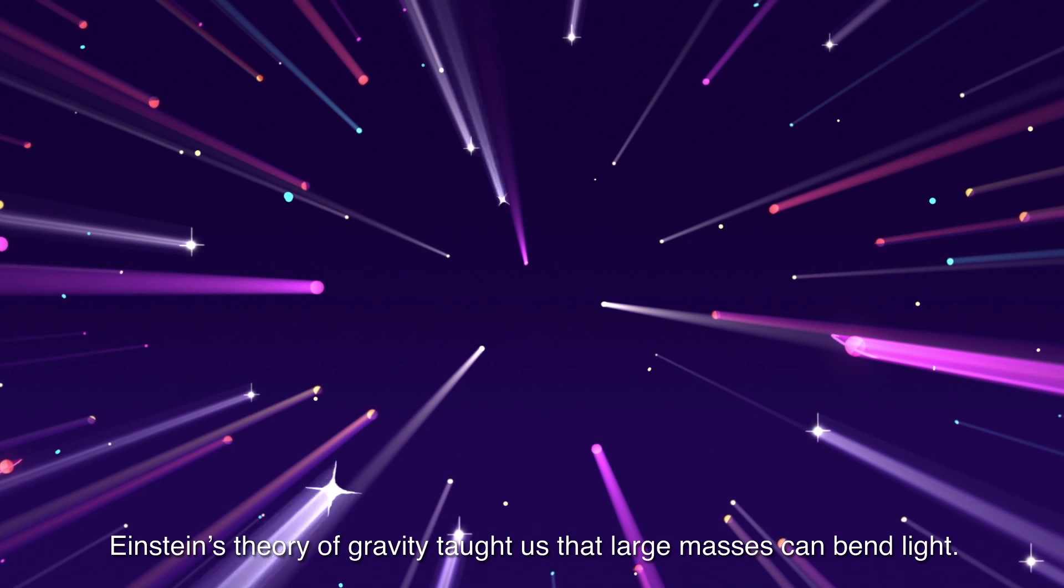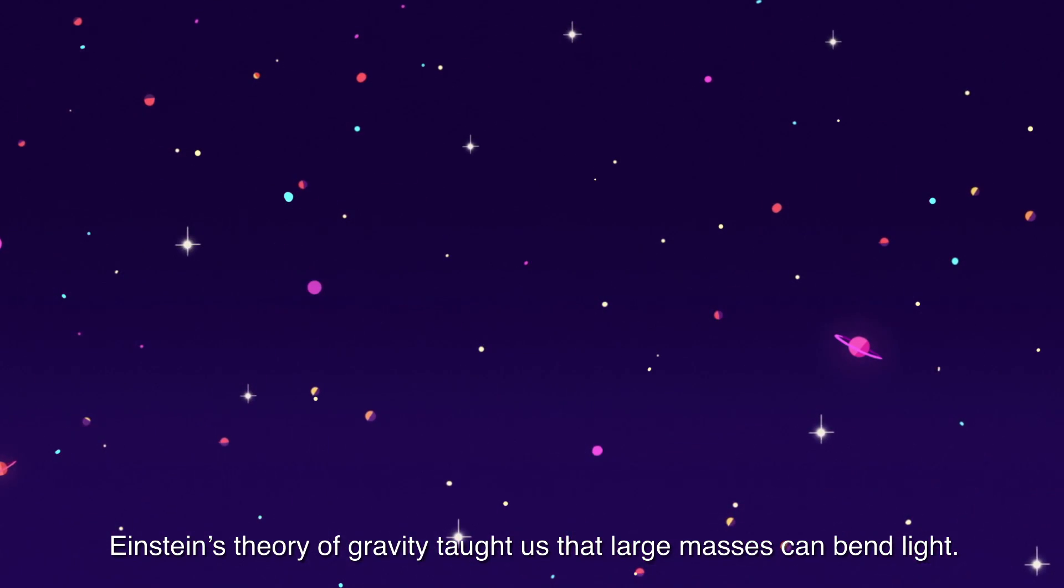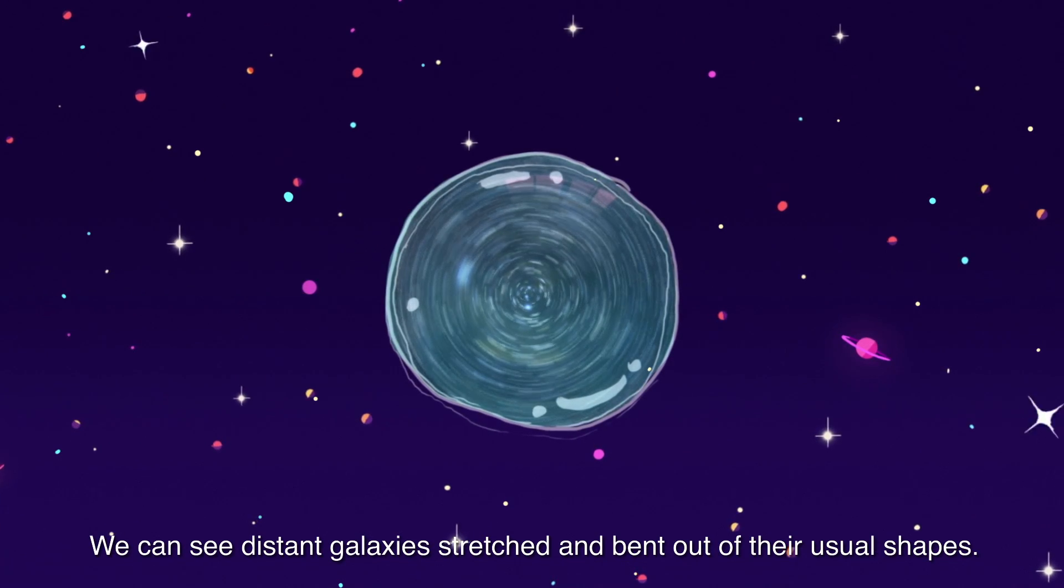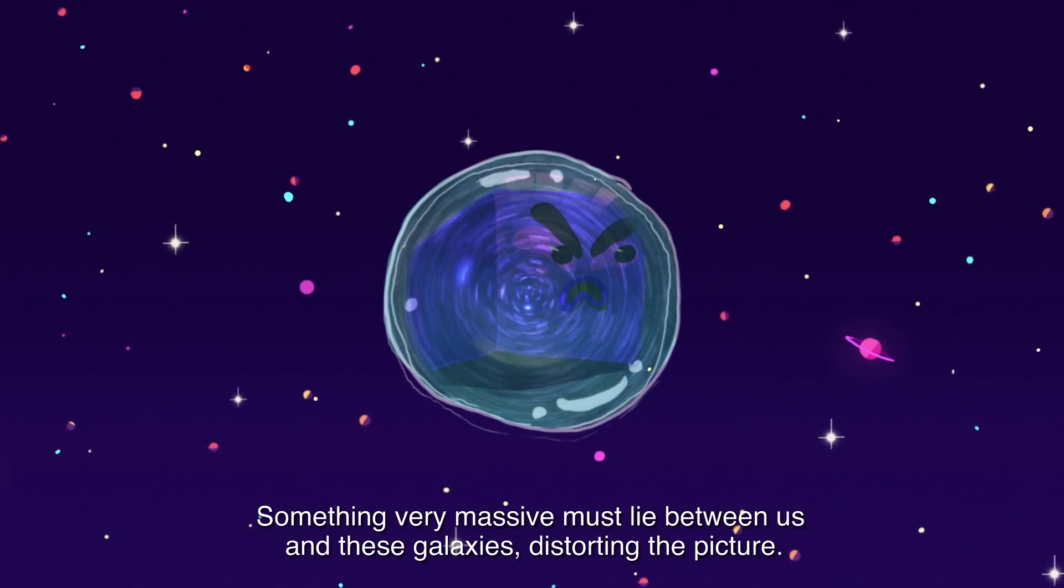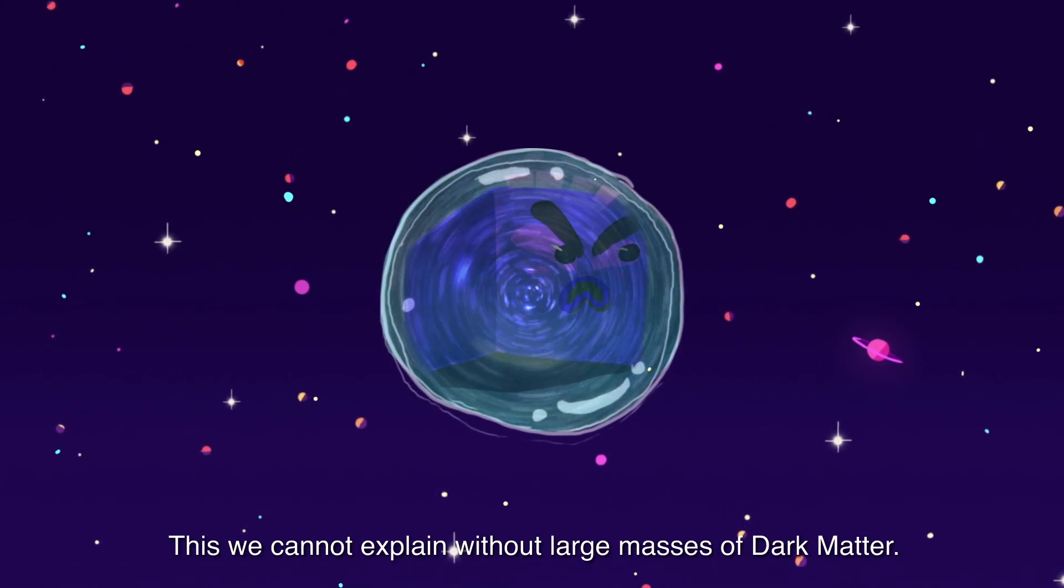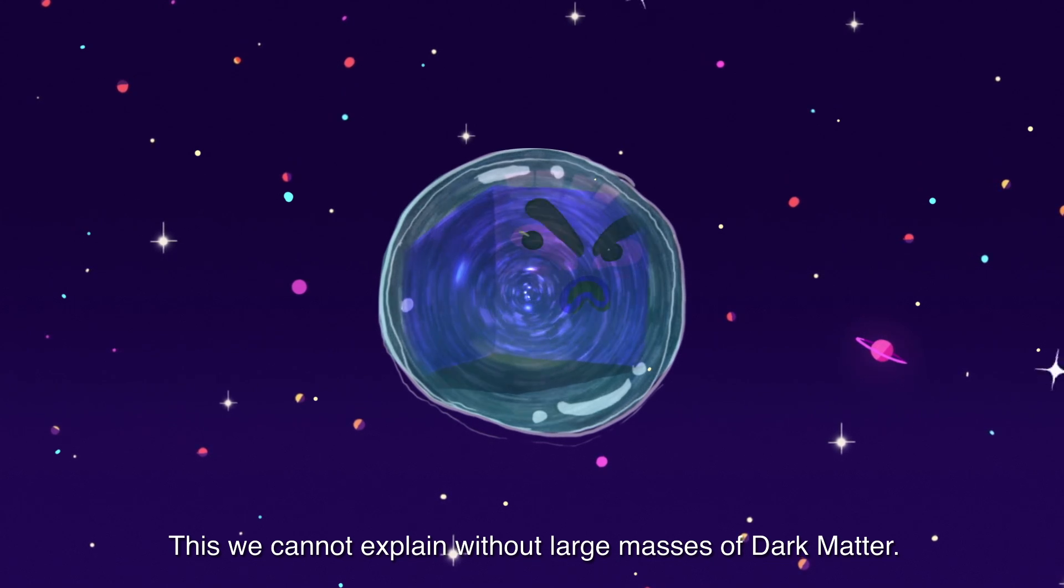Einstein's theory of gravity taught us that large masses can bend light. We can see distant galaxies stretched and bent out of their usual shapes. Something very massive must lie between us and these galaxies, distorting the picture. This we cannot explain without large masses of dark matter.